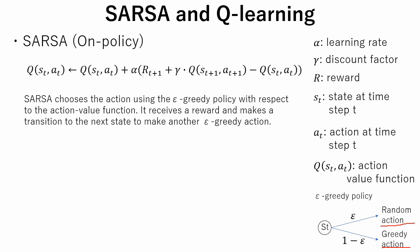SARSA receives a reward and makes a transition to the next state to make another epsilon greedy action. In other words, the reason that SARSA is on-policy is that it updates its Q-values using the Q-value of the next state and the current policy's action. It estimates the return for state-action pairs assuming the current policy continues to be followed.